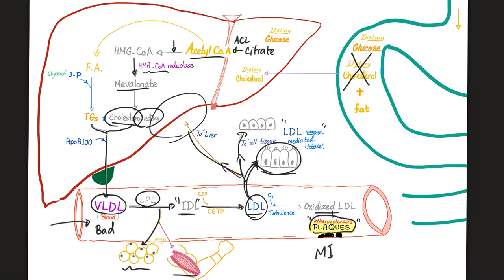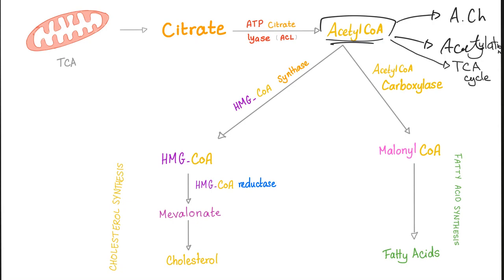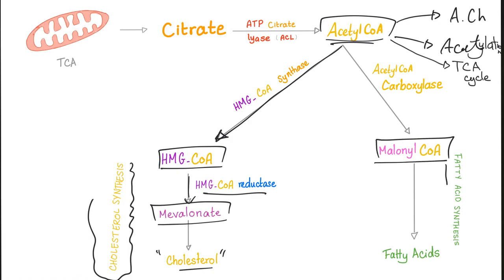The TCA cycle provides citrate. Citrate, isocitrate, alpha-ketoglutarate, succinyl-CoA, succinate, fumarate, malate, oxaloacetate, back to acetyl-CoA. By ATP citrate lyase (ACL), citrate is converted into acetyl-CoA. Acetyl-CoA has many options — it's used for acetylcholine, acetylation of other compounds, and more. By HMG-CoA synthase it gives HMG-CoA; by HMG-CoA reductase it gives mevalonic acid. There's also a separate pathway forming malonyl-CoA for fatty acid synthesis, stimulated by insulin and inhibited by glucagon.